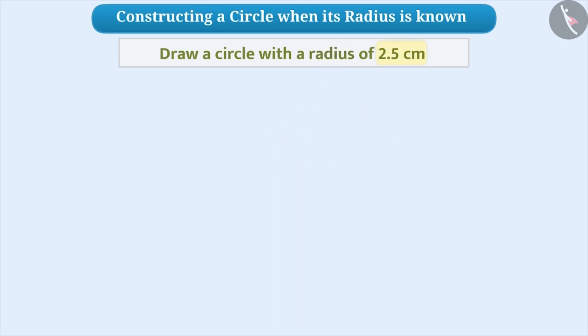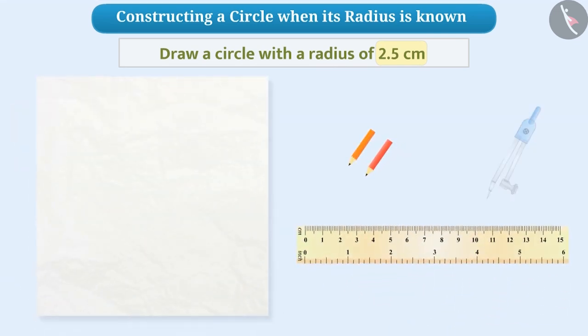To draw a circle using the measurement of the radius, we need a paper, two pencils, a ruler, and a compass.